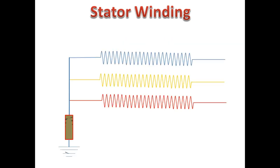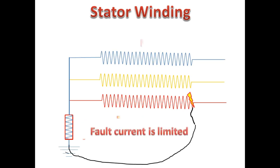The current limiter may be a neutral ground resistor or neutral ground transformer. If the winding has an earth fault, the fault current gets limited due to this current limiter.